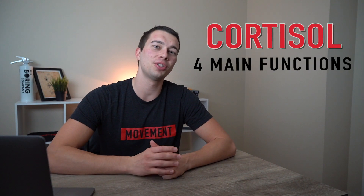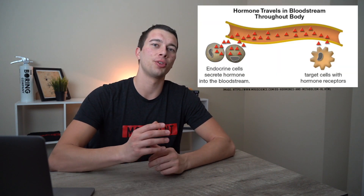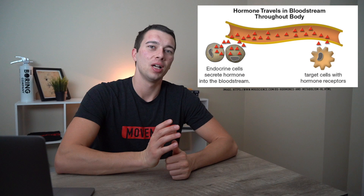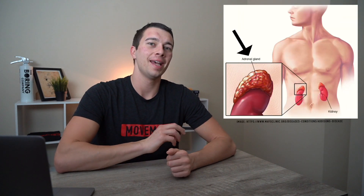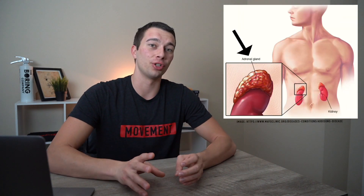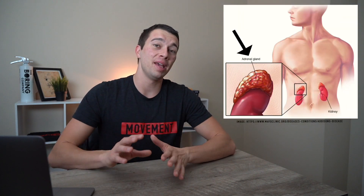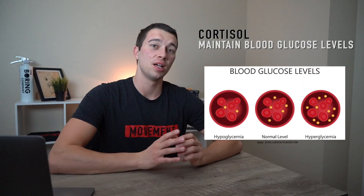Hey, what's up guys, it's Matt with The Movement System and today we're going to talk about the four main functions of cortisol. To lay the groundwork, cortisol is a hormone, and hormones are chemical messengers that work through our bloodstream. Cortisol specifically is released by the adrenal gland and goes into the bloodstream, and the main overarching goal of cortisol is to maintain blood glucose levels.